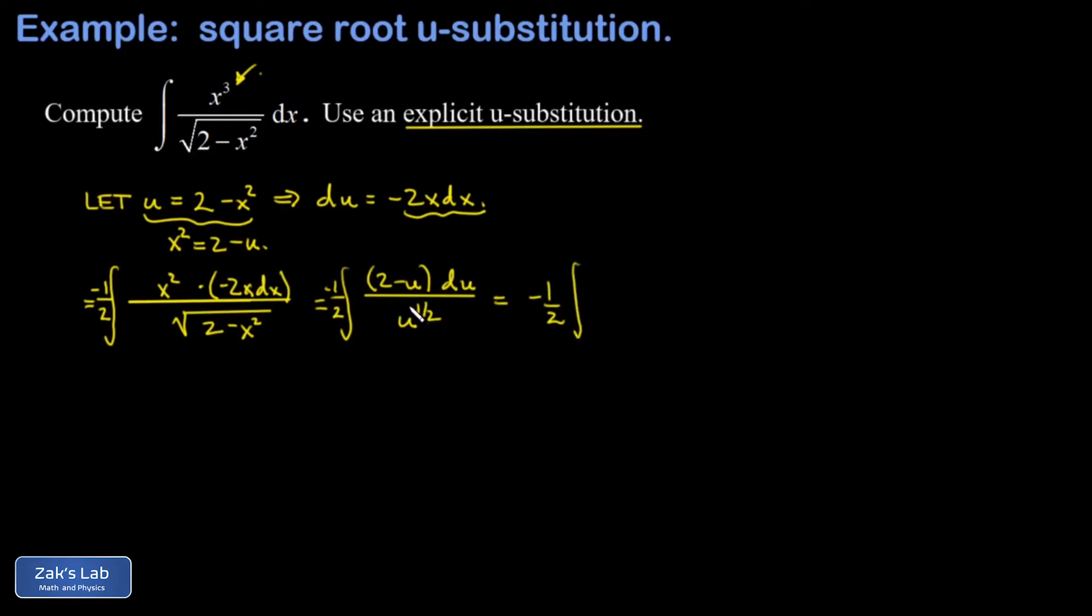What I want to do is split up the integrand into two terms. I have 2 divided by u to the 1 half, and that's 2u to the negative 1 half. And then I have a minus u divided by u to the 1 half. So a minus u to the 1 half.